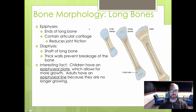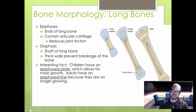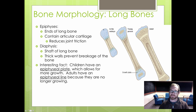Long bones have an interesting morphology. When you are younger, the ends of long bones are made up of hyaline cartilage. As we develop, this cartilage forms bone. When we become adults, we maintain some cartilage, but it's only used to reduce joint friction between two bones. The ends of our bones are called epiphyses, and the middle is called the diaphysis — two epiphyses and one diaphysis in between.